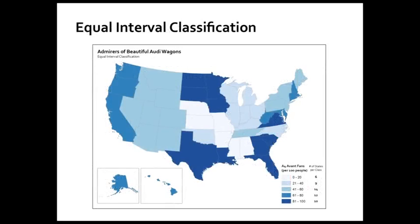Let's look at some map examples of each method. I've got some fake data showing the proportion of people who are admirers of Audi station wagons. This particular map shows equal interval classification. If you look in the legend, what I care about is neatness in the value range for each category: the first category is 0 to 20 people per 100, then 21 to 40, and so on. I've also printed the number of states in each class. In this case, the lowest category has only six states, whereas some higher categories have over 10.